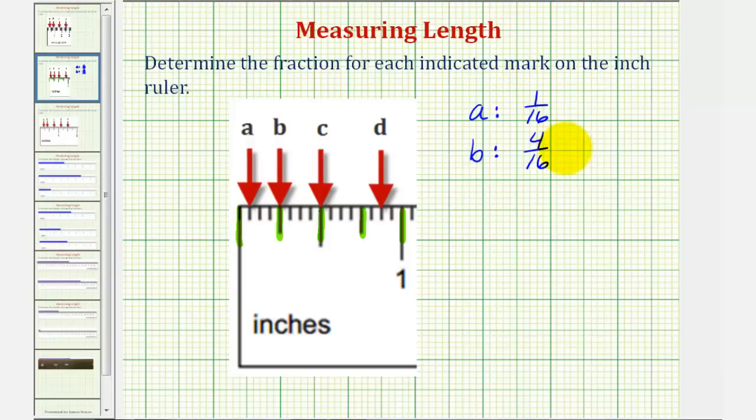One-fourth would be the simplified fraction for four-sixteenths, which is normally the preferred method to express a fraction. But because these fractions are equal with different numerators and denominators, they are called equivalent fractions.